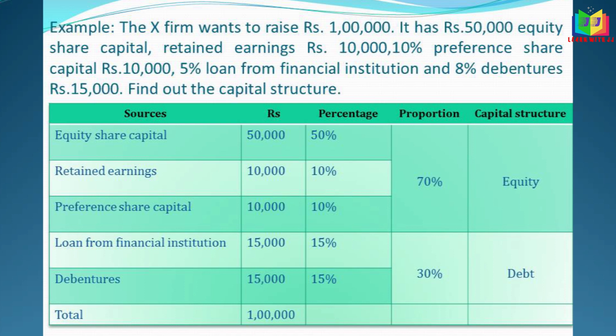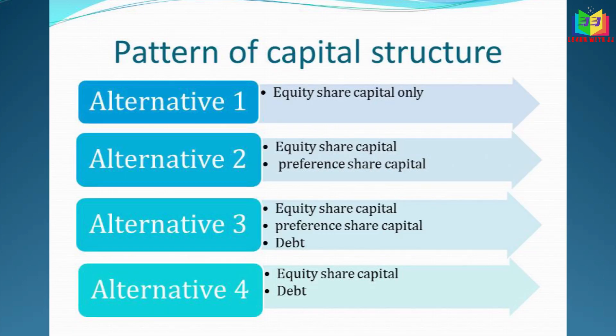To find the debt and equity proportion: equity share capital, retained earnings, and preference share capital together form the equity — so 50 plus 10 plus 10 equals 70% is the equity content. The loans and debentures together — 15 plus 15 — give 30% as the debt proportion. So the debt-to-equity ratio is 30:70. Debt is the borrowed fund from outsiders, while equity fund is the owner's fund, that is the internal source.